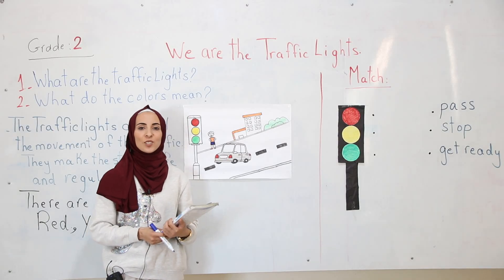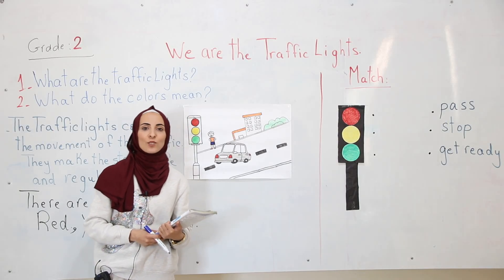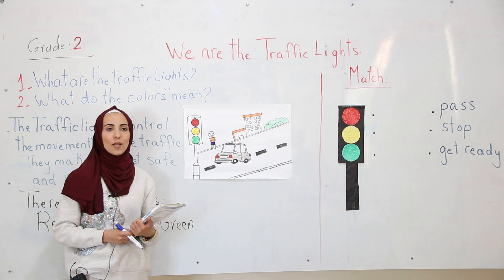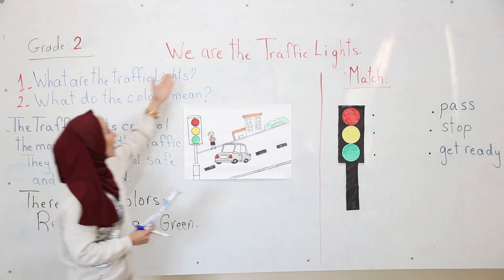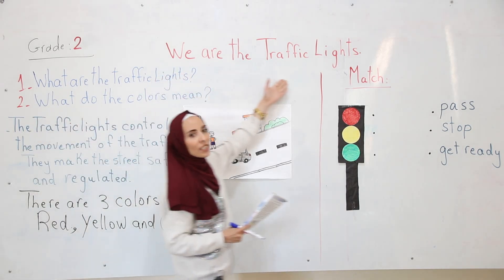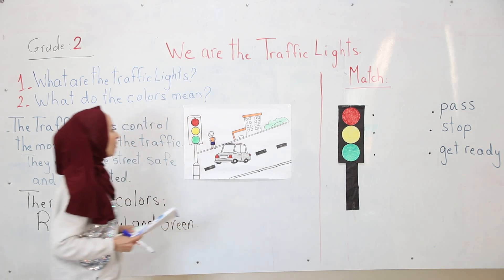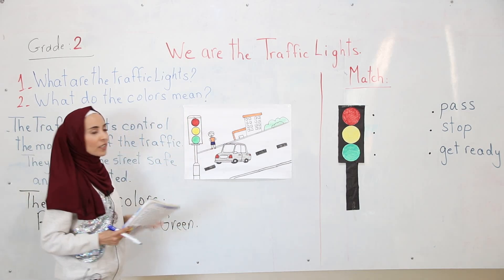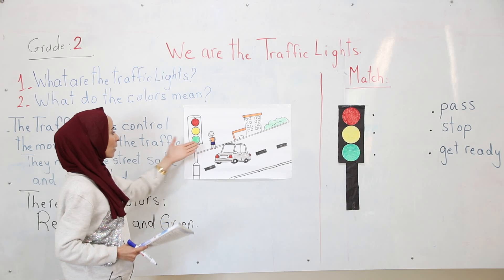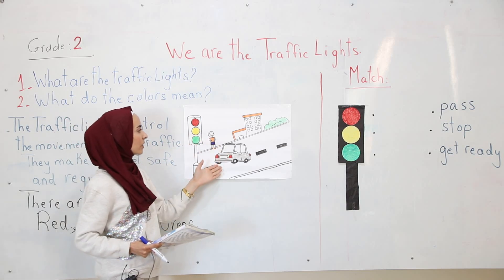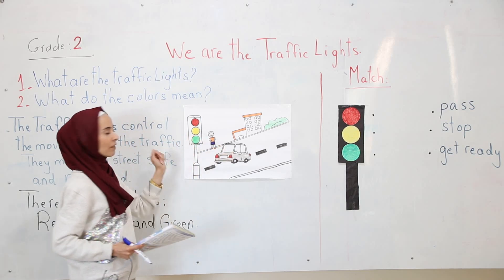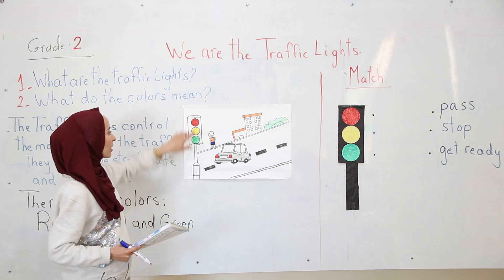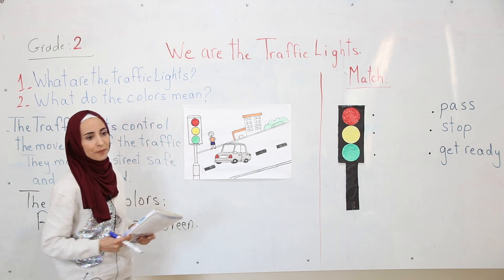Good morning, my dear students. Today we have an exciting lesson which is about traffic lights. First, look at the picture please. What do you see in the picture? We see a boy, a street, a car, and traffic lights. So these are the traffic lights.